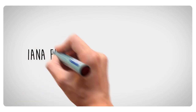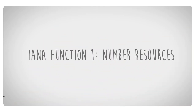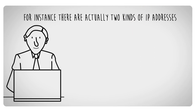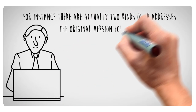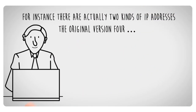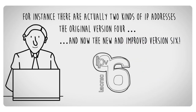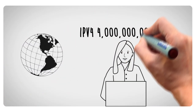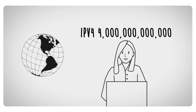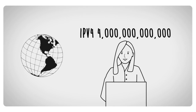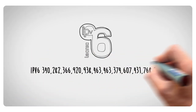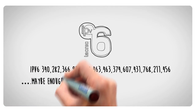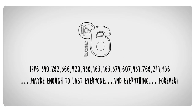It sounds simple, but it's a little more complicated than that. For instance, there are actually two kinds of IP addresses: the original version 4, and now the new and improved version 6. Engineers originally created 4 billion IPv4 addresses thinking that would be plenty, but we ran out. But look how many IPv6 addresses are now available — maybe enough to last everyone and everything forever.